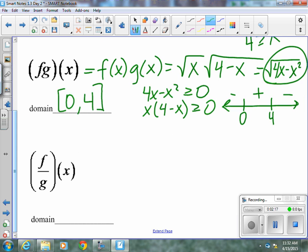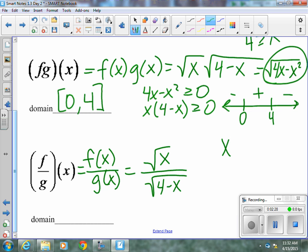This last one, f divided by g of x, is the same as f of x divided by g of x. So we get radical x over radical 4 minus x. The top tells us that x has to be greater than or equal to 0.